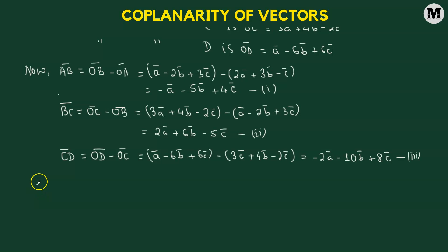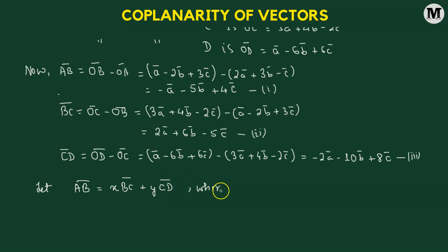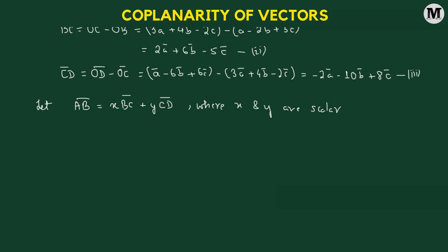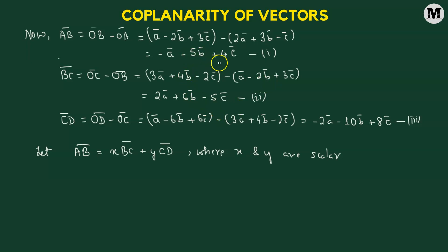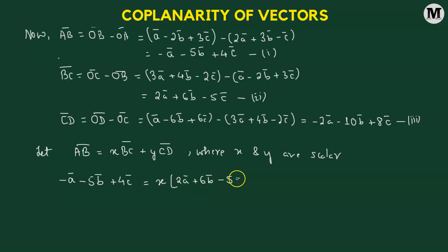We consider whether vector AB can be expressed as a linear combination of the other two vectors. So let AB = x·BC + y·CD, where x and y are real scalars. Substituting: -a - 5b + 4c = x(2a + 6b - 5c) + y(-2a - 10b + 8c).